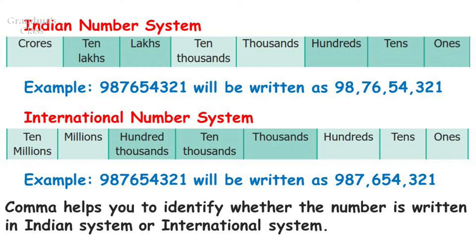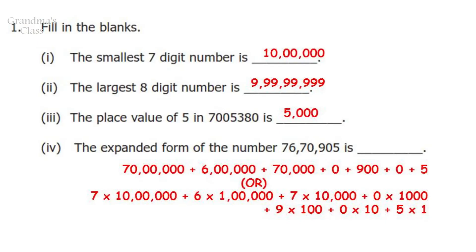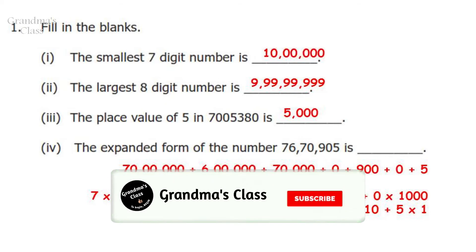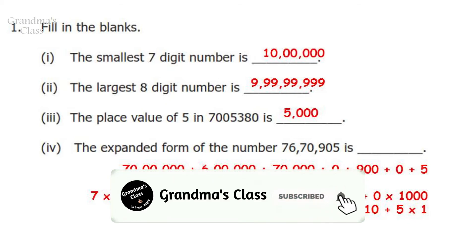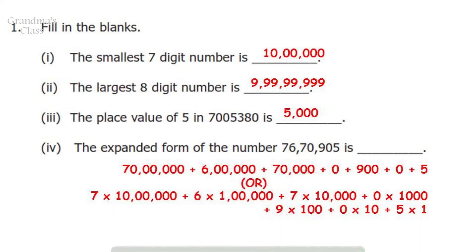Now let us see the exercise. Question number 1: Fill in the blanks. The smallest 7-digit number is 10 lakhs. The largest 8-digit number is 9 crores, 99 lakhs, 99,999.